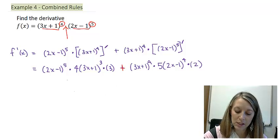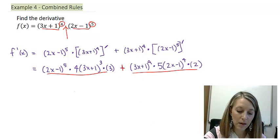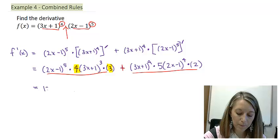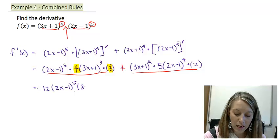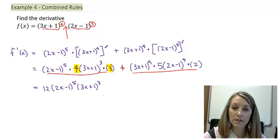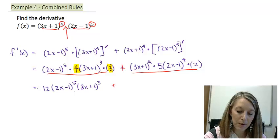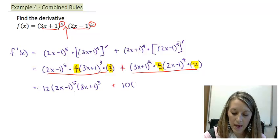Now we need to simplify. The major separator is the plus sign, so let me condense each piece as far as I can. I have constants: 4 times 3 gives me 12, then copying down the rest — I cannot simplify further because each part has its own exponent. Plus my second piece: 5 times 2 gives me 10, times (3x + 1) to the fourth, times (2x − 1) to the fourth.